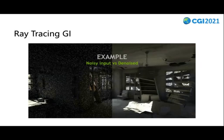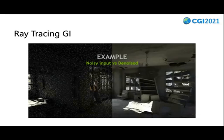Next, RaytracingGI. RaytracingGI runs the path tracing algorithm at very low samples per pixel, which makes real-time performance possible but with a heavy increase of noise. Denoising improves the quality to a certain extent, but it also brings problems such as loss of detail and ghosting. In addition, the cost of this kind of method is huge, which limits its users.